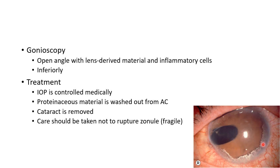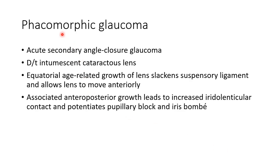Coming to phacomorphic glaucoma — it is acute secondary angle closure glaucoma which occurs due to an intumescent cataractous lens. Equatorial age-related growth of the lens slackens the suspensory ligament and allows the lens to move anteriorly. The associated anteroposterior growth leads to increased iridolenticular contact and potentiates pupillary block and iris bombe. This is the pathogenesis of phacomorphic glaucoma.